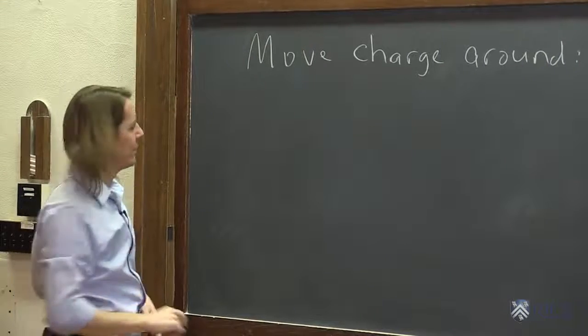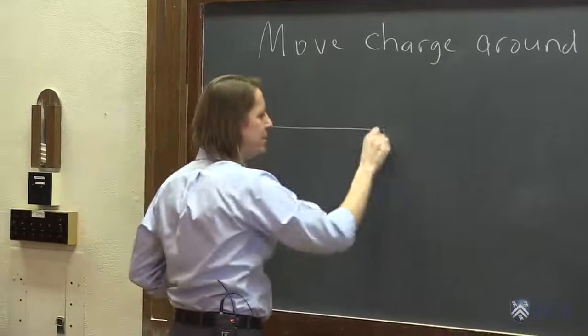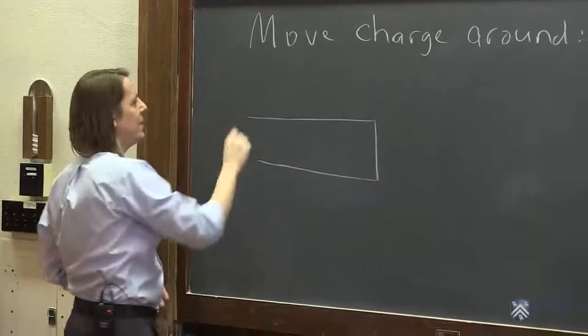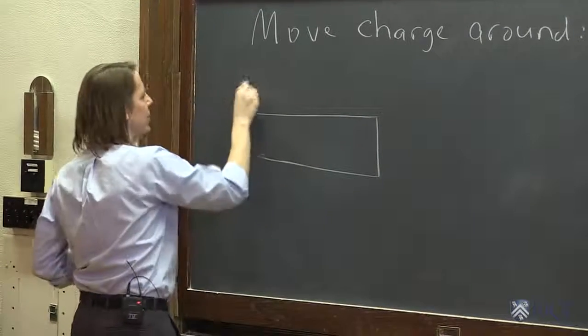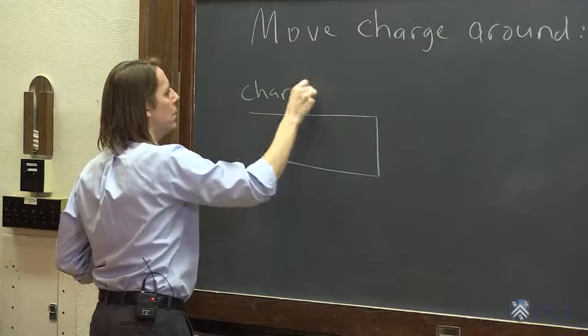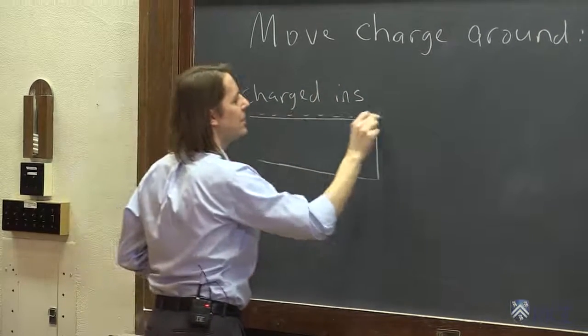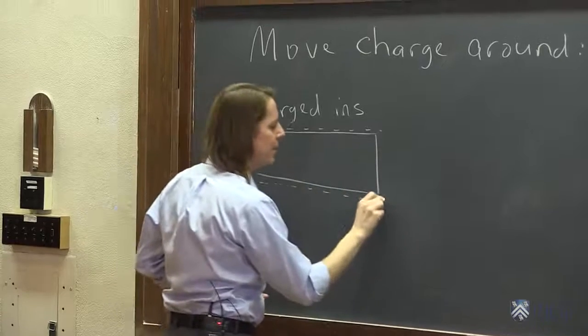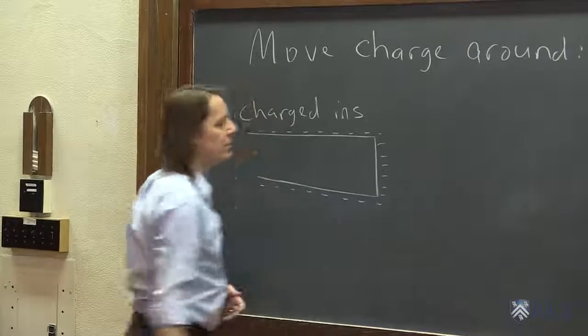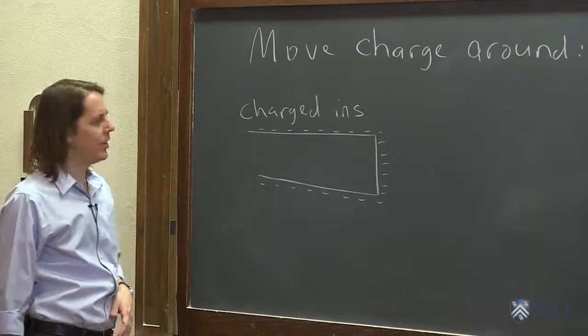Let's try a mixture of insulators and conductors. Let's imagine we have a charged insulator. And the way I've drawn it, it's pretty much just like the Teflon rod. It's got negative charge on its surface, and that charge isn't going anywhere. It's staying on the surface.